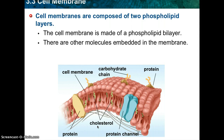A mosaic is a work of art made of individual tiles or other pieces assembled to form a picture or design. Some of the proteins form channels and pumps that help to move materials across the cell membrane. Many of the carbohydrates act like chemical identification cards, allowing individual cells to identify one another. As you can see in this picture, we have cholesterol, carbohydrate chains, and proteins.